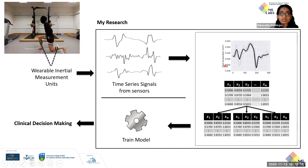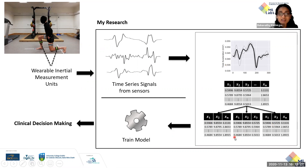Trying to answer questions like: how can we aggregate multiple time series into one whilst retaining the required information? And how can we select parts of our data to input into our model to improve performance and efficiency of the model?